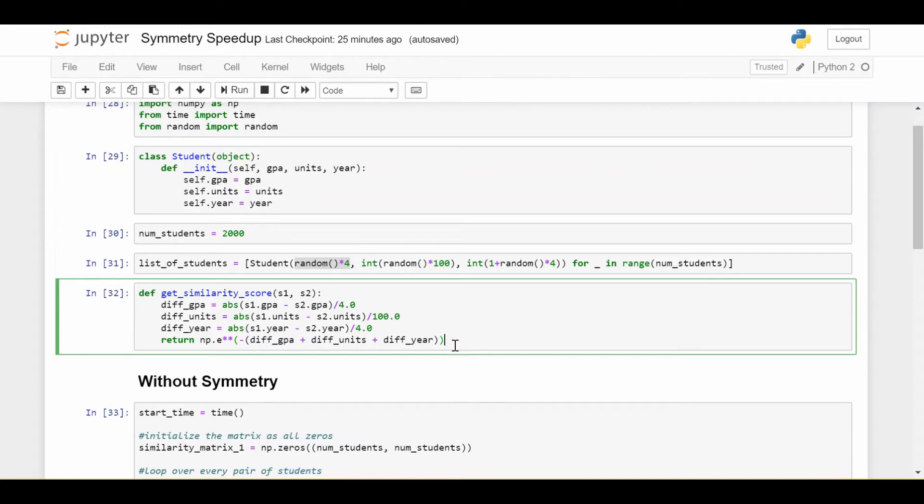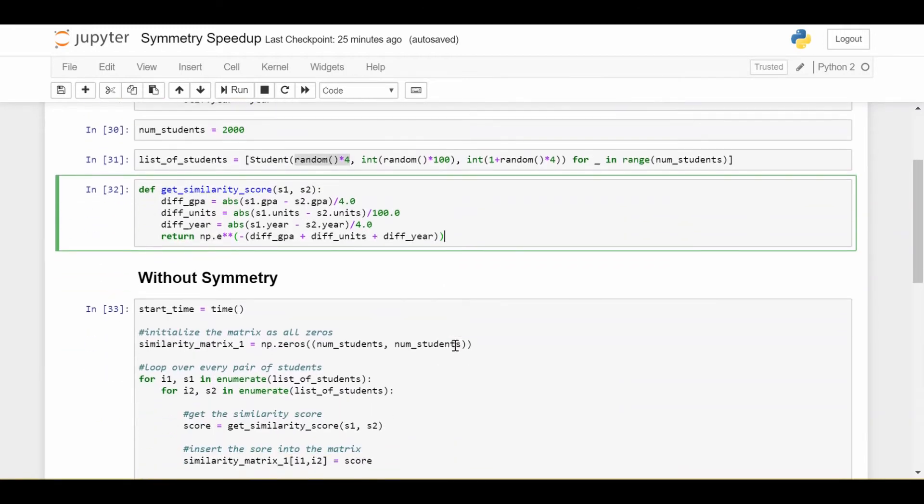So that's what the similarity score is. And our goal is, as we saw on the whiteboard, to generate a big similarity matrix. So that's 2,000 by 2,000, where every single number in that similarity matrix is the similarity score between student I and student J. Now, as we saw on the whiteboard also, this is going to be a symmetric matrix, right?